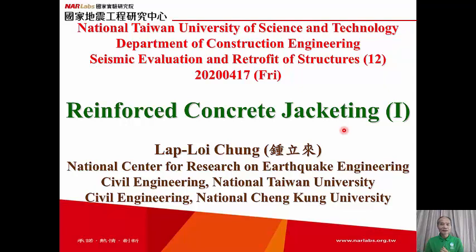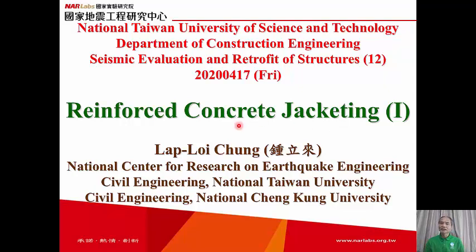Today the topic is Reinforced Concrete Jacketing. After evaluation, if a structure is found to be not sufficient in terms of seismic performance, we have to do something to upgrade the seismic performance. Reinforced Concrete Jacketing is a very common method in Taiwan — it makes the column cross-section larger by putting a Reinforced Concrete Jacket on the column in order to enhance the seismic capacity of those columns.